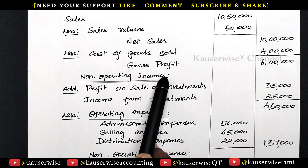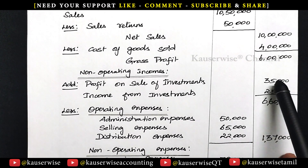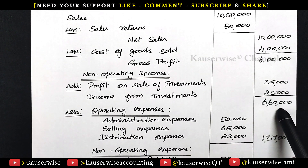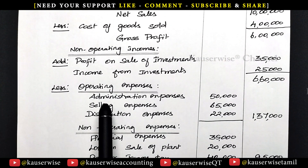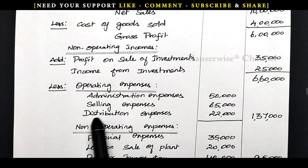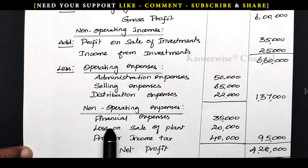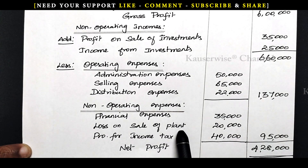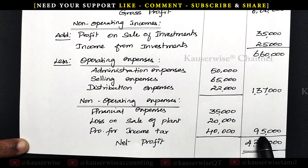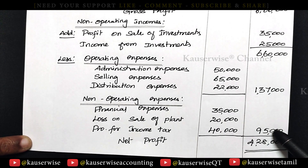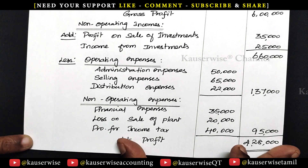Non-operating income is then added — profit on sale of investment and income from investment — bringing the total to 6 lakh 60,000. Then operating and non-operating expenses are subtracted. Operating expenses include administrative expense, selling expense, and distribution expense, totaling 1 lakh 37,000. Non-operating expenses include financial expenses, loss on sale of plant, and provision for income tax, totaling 95,000. After subtracting both, the residual amount of 4 lakh 28,000 is the net profit as per the income statement.